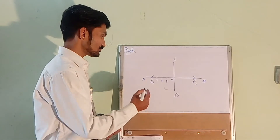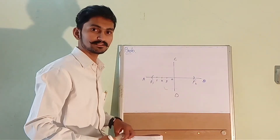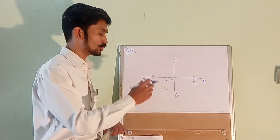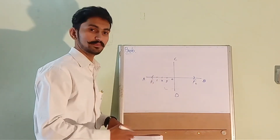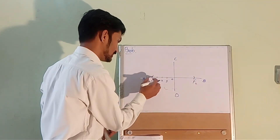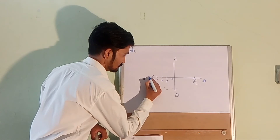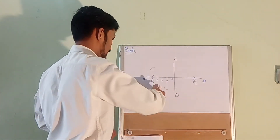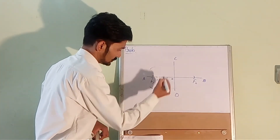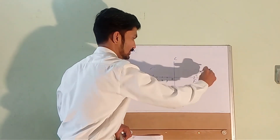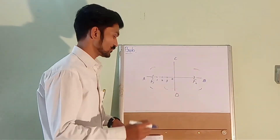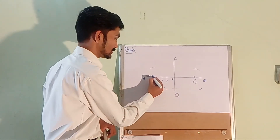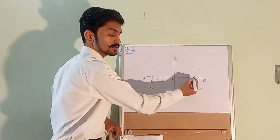Take F1 and F2 as centers and A to 1 as radius and draw arcs on both sides of AB. So F1 is our center and A to 1 is our radius — draw arcs on both sides. Then take F2 as center with the same radius and draw arcs on both sides. The radius is the same for all four arcs but the centers differ: F1 and F2 respectively.